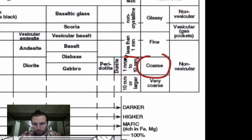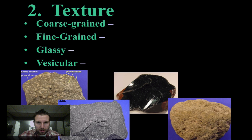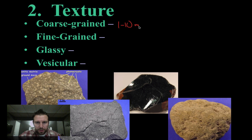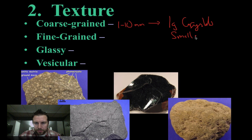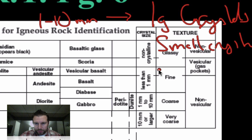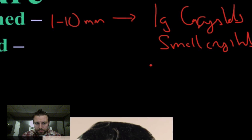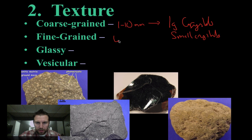Coarse-grained means a crystal size of 1 to 10 millimeters, which is going to be large crystals. Fine-grained would be small crystals — we can go back and look at the reference table: fine-grained is less than 1 millimeter.